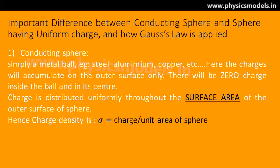Now there is an important difference between a conducting sphere and a sphere having uniform charge, and we must be very careful what we are dealing with. In this particular video we are dealing with a conducting sphere like a metal ball made of steel, aluminum, copper, etc. The charge is distributed very evenly and it will all accumulate on the outer surface of that ball. There will not be any charge inside the ball, inside the conductor. Therefore the charge density for such cases is charge per unit area of the sphere.